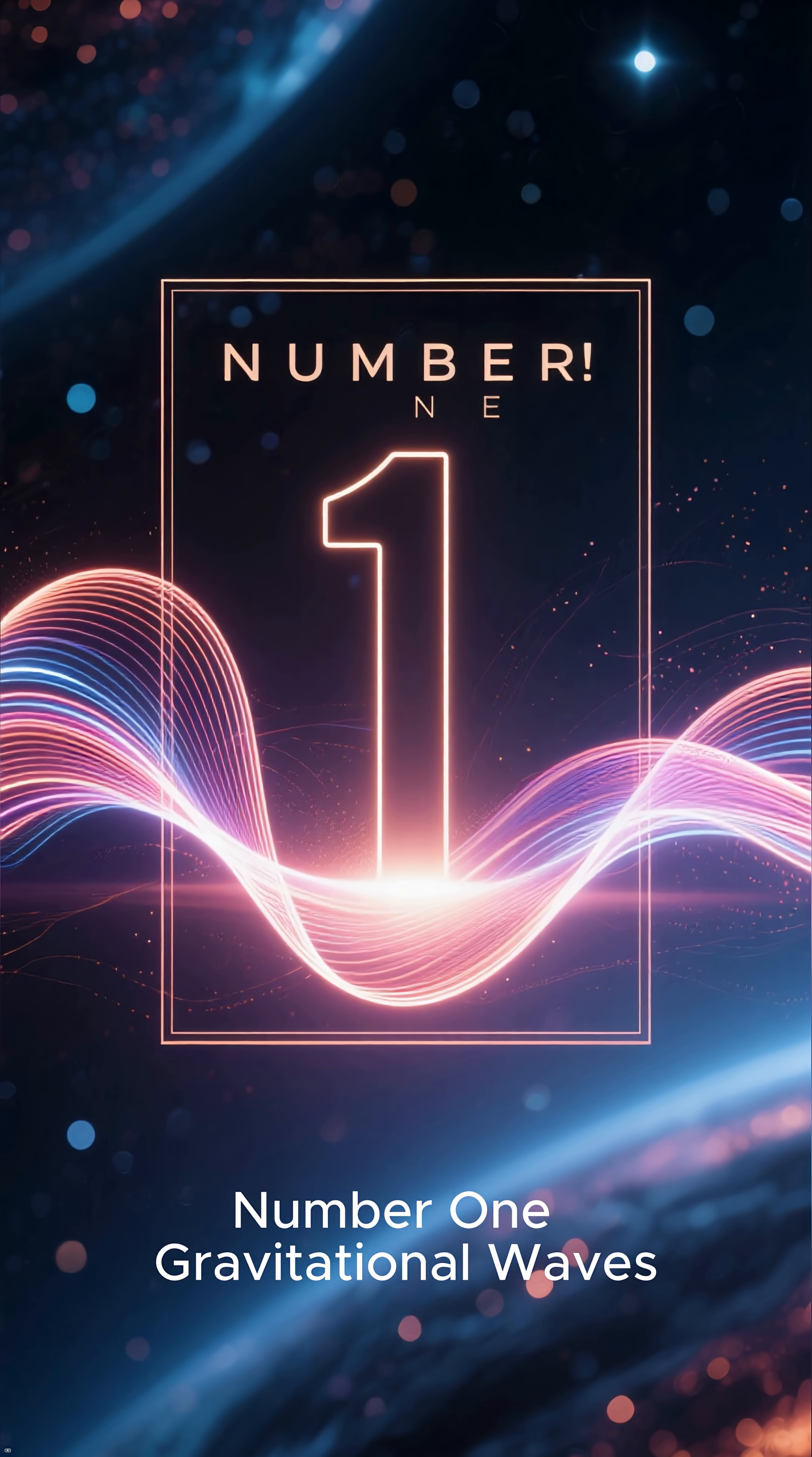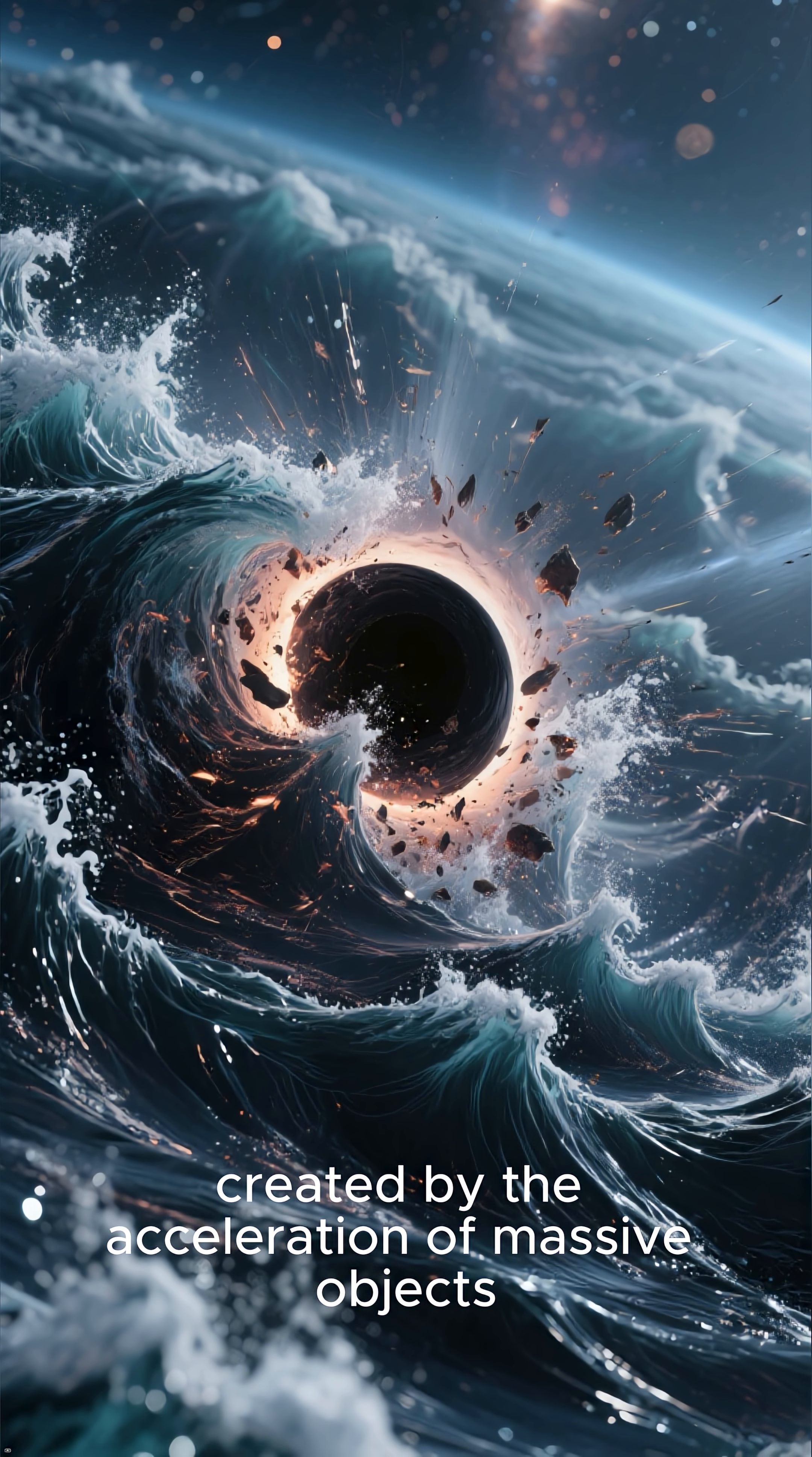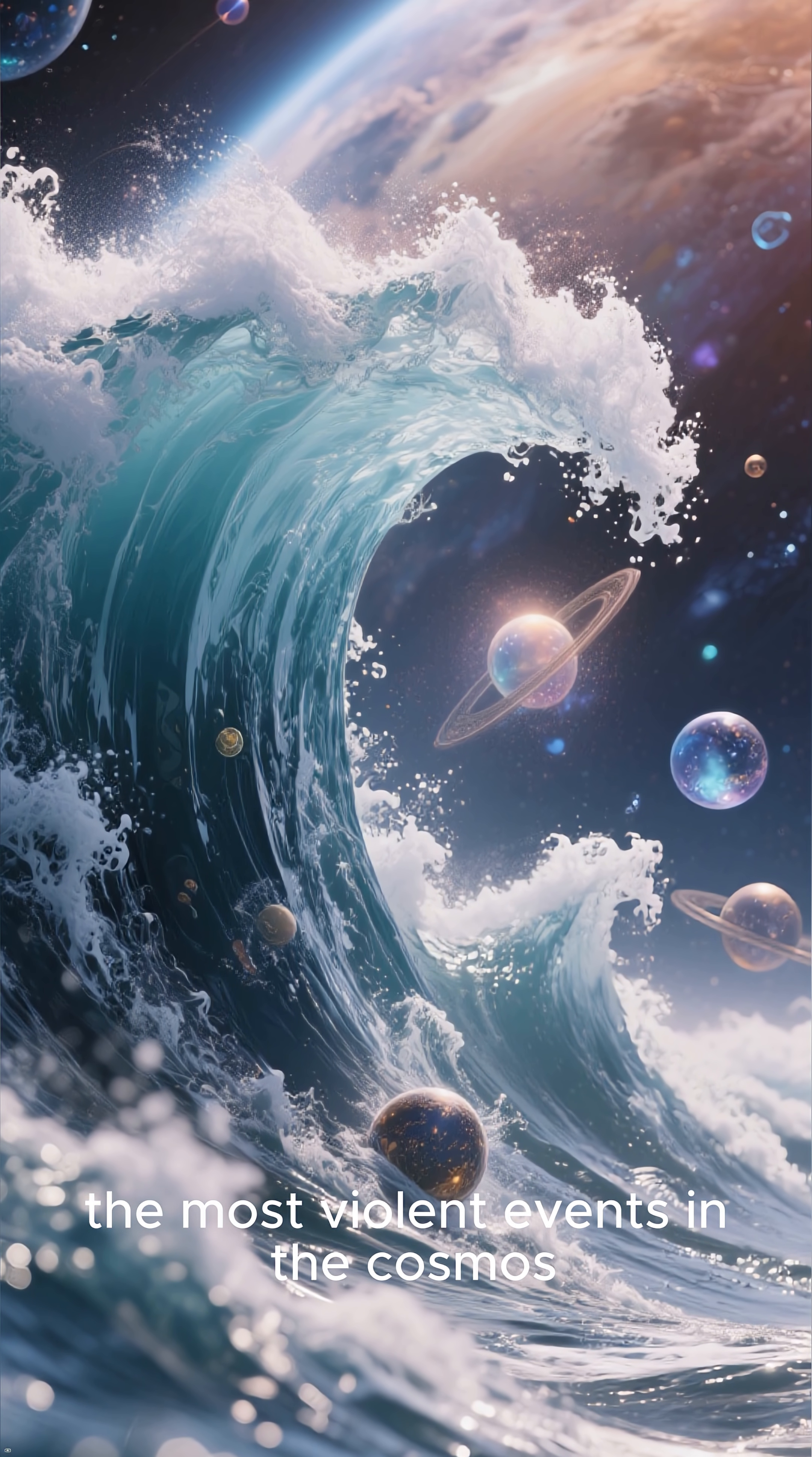Number 1. Gravitational Waves. Finally, the most dynamic and profound warping of spacetime: gravitational waves. These are ripples in spacetime itself, created by the acceleration of massive objects, like merging black holes. These waves stretch and compress the fabric of the universe as they pass. A direct and measurable confirmation of Einstein's theory, and a new way to hear the most violent events in the cosmos.